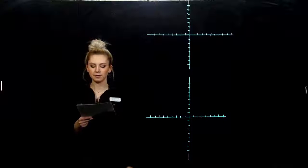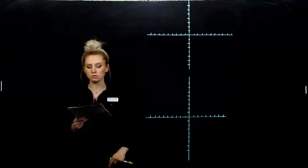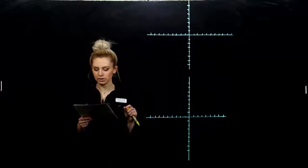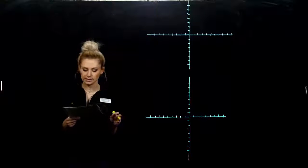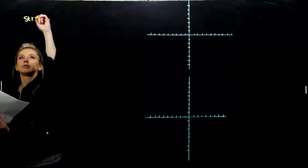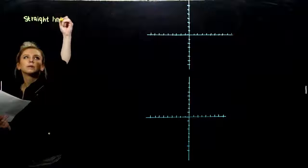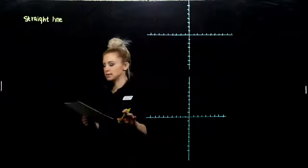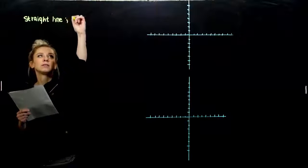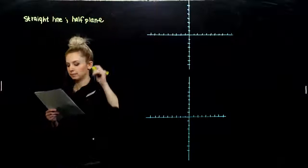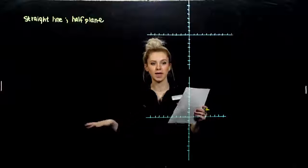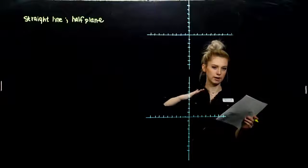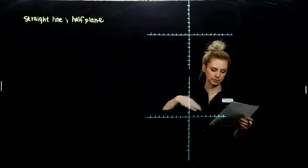A linear inequality is one that we can get from a linear equation by changing the equals symbol into an inequality symbol. Every linear equation has a graph that is a straight line, like we've seen when drawing the boundary line. The graph of a linear inequality is a half plane, sometimes including the line along the boundary. The two cases we graphed last didn't include the boundary line because we didn't have the equality case underneath our inequality.